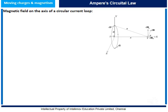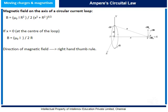The magnetic field on the axis of a circular current loop is given by B = μ₀ir² / (2(x² + r²)^(3/2)), which is the magnetic field at a point P on the axis. However, if x = 0, that is, at the center of the loop, then the magnetic field equals μ₀i / (2r), where r is the radius of the loop. The direction of the magnetic field is given by the right-hand thumb rule.